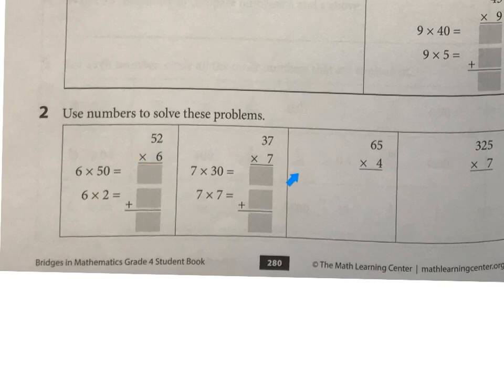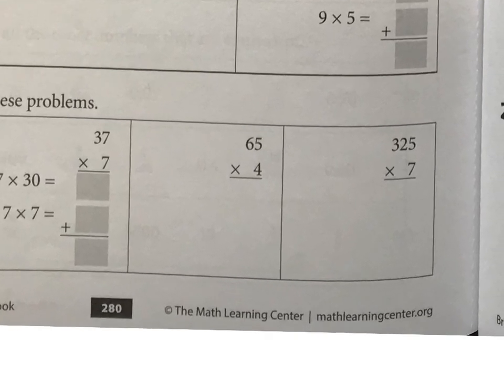So over here, for this one, you're going to have 4 times 60 equals what, and 4 times 5 equals what. You might have another method, but please use this method for now.